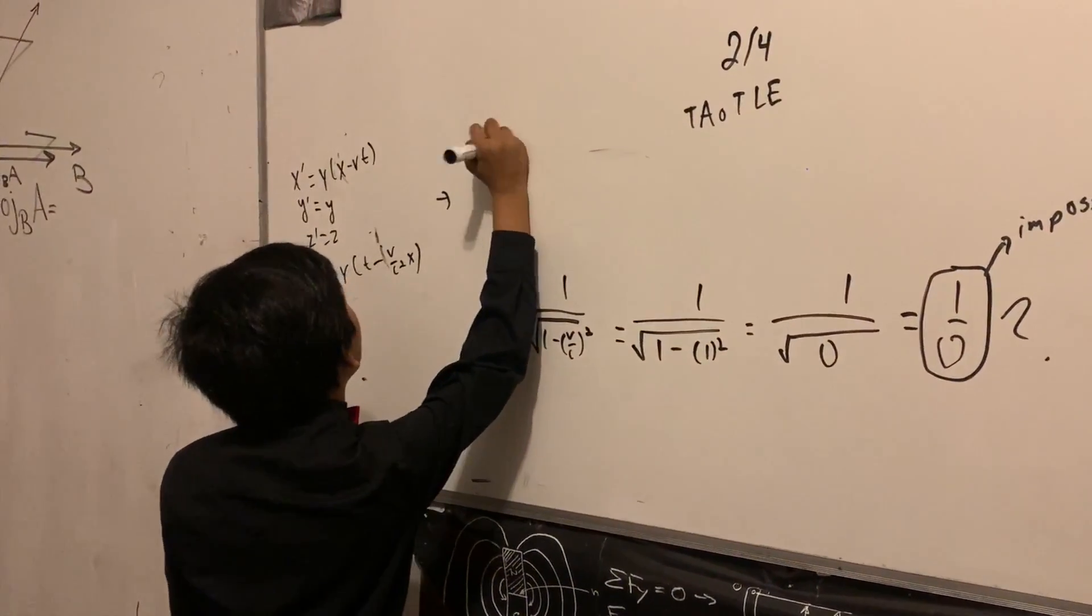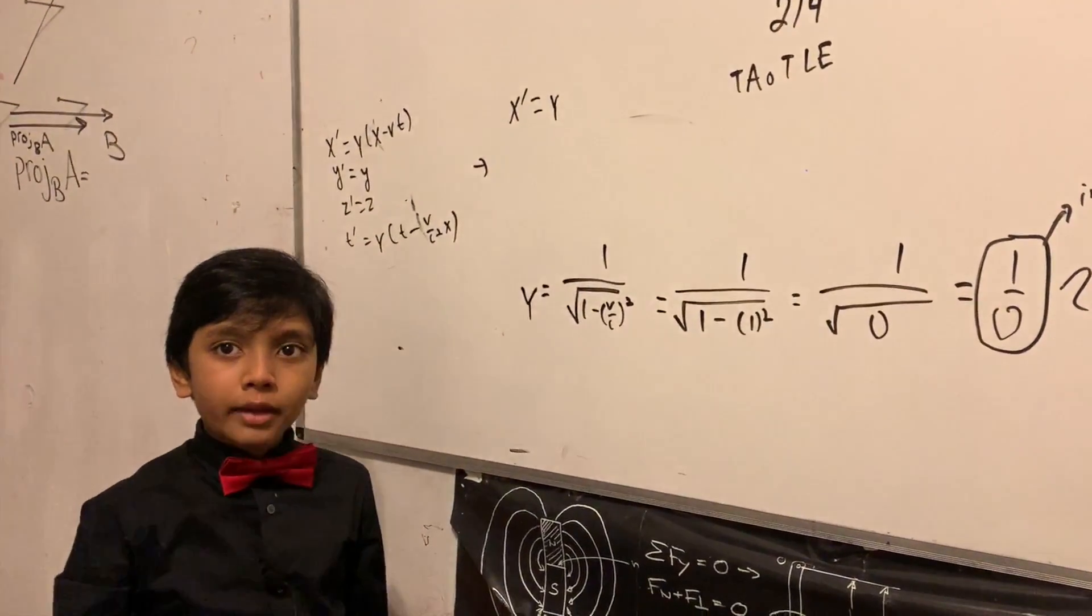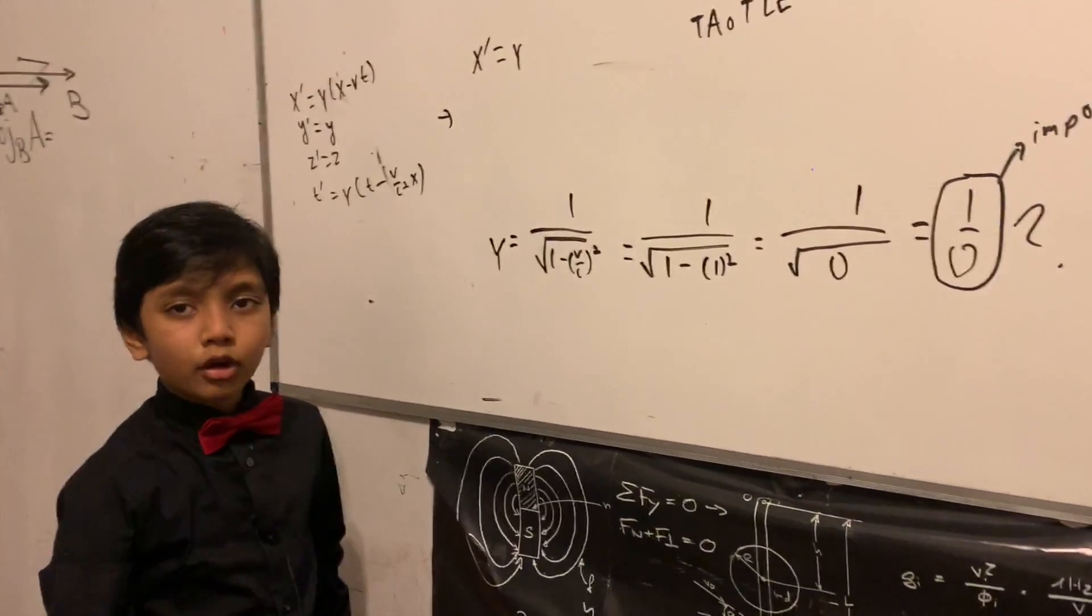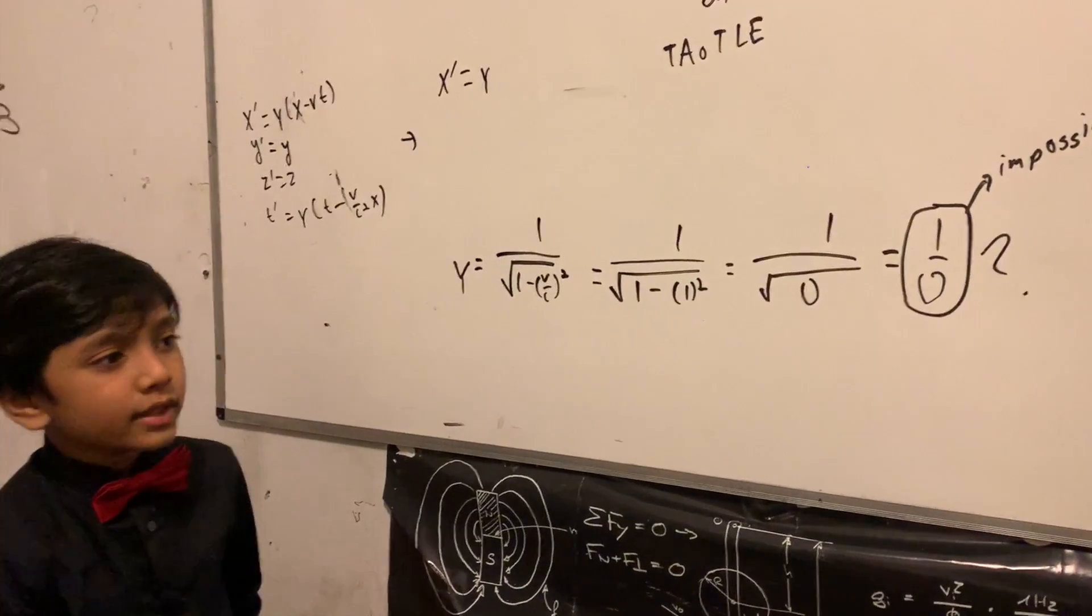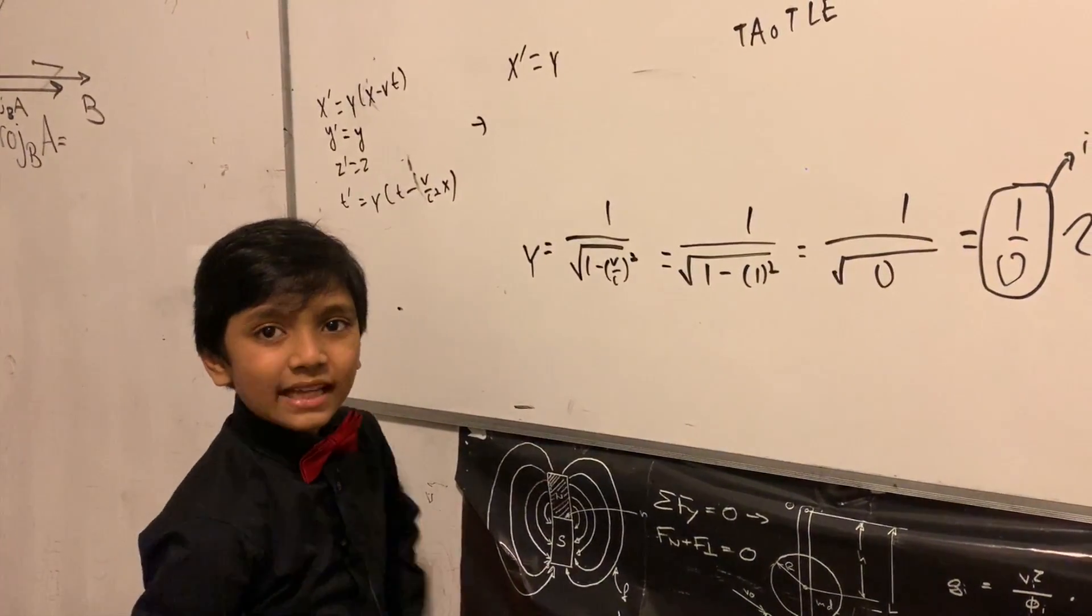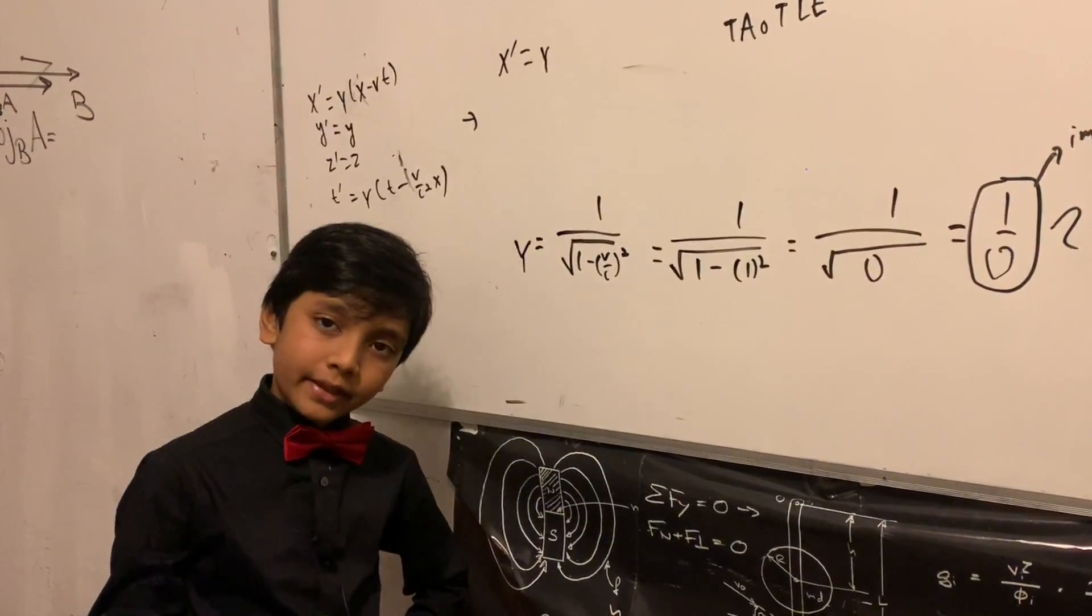You just flip all the signs. And for a rest observer to describe another person at rest, his inertial reference frame or IRF for short, they only need to know the other one's position relative to them.